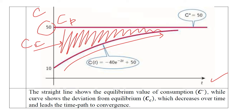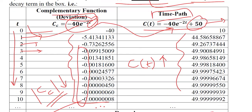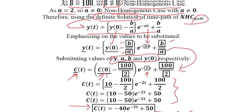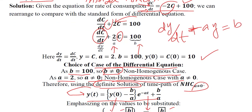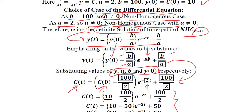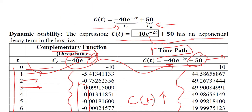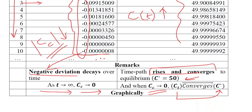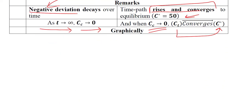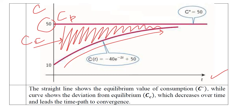So we have done a numerical application of the first order differential equation to the consumption function of an individual. We were given a situation from which we extracted the differential equation and solved it using the standard procedure. We then developed the time path, built a table by assuming values of t from 0 to 10, and made a graph clearly showing convergence because the complementary function fades over time and we approach equilibrium.